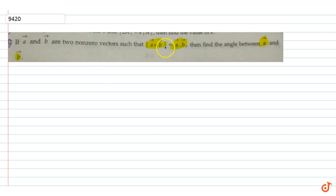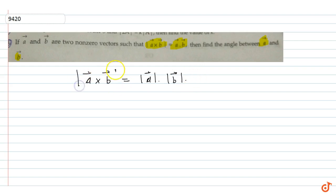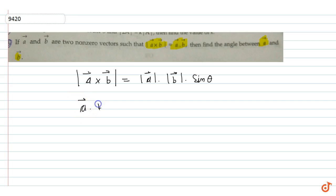We are given that mode of a vector cross b vector equals a vector dot b vector. Now, a vector cross b vector is equal to mode of a vector into mode of b vector into sin theta. And a vector dot b vector is equal to mode of a vector into mode of b vector into cos theta.